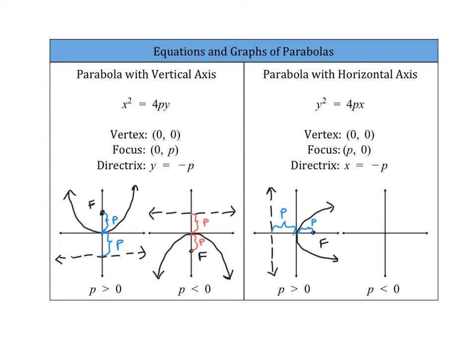If your p-value is negative, we have a parabola facing to the left. The focus is on the inside of the parabola, and the directrix is to the right of the parabola — it is a vertical line. Our goal today is to use these forms of the equations to find the focus and the directrix and to sketch a graph.